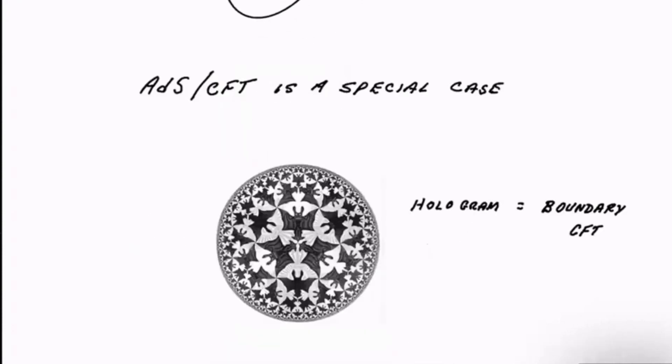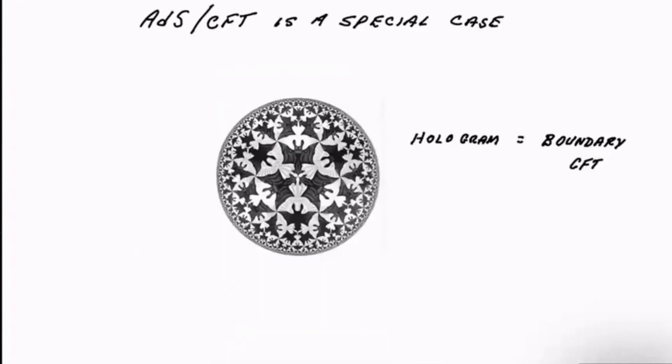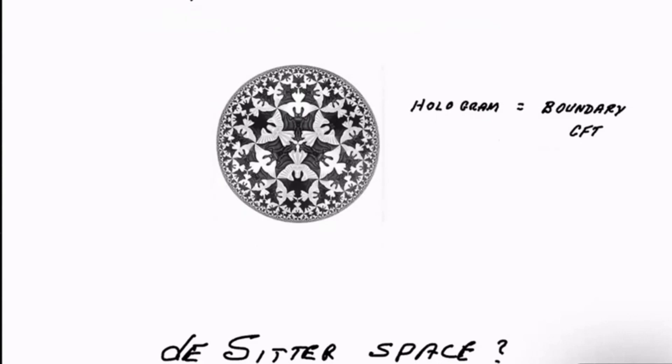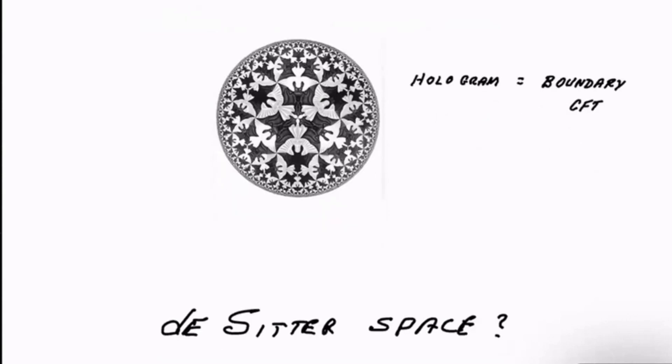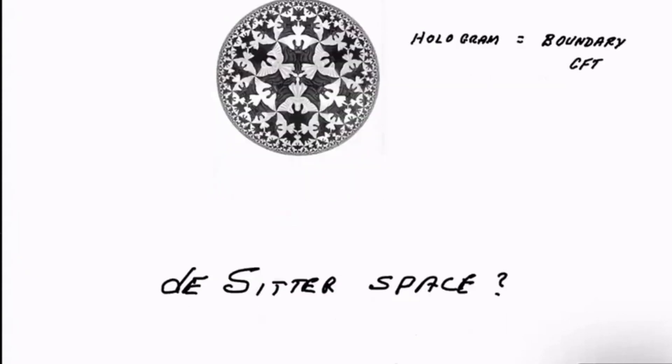ADS-CFT is a special case. It's a special case in which the geometry is asymptotically, for the most part, anti-de Sitter. There's a picture of a spatial slice of anti-de Sitter space, and if we want to describe the whole space, we need to put the holographic, the hologram, let's just call it the hologram, out at the boundary where the area is largest.